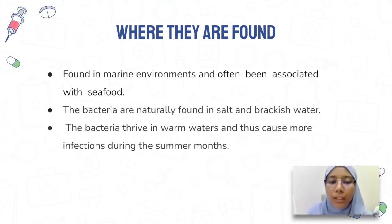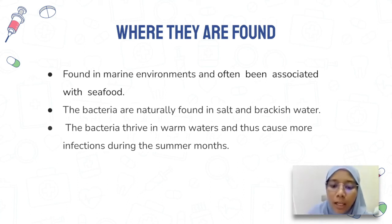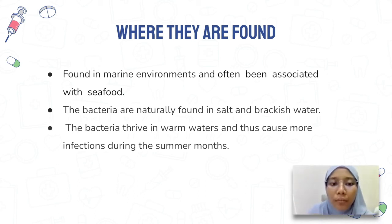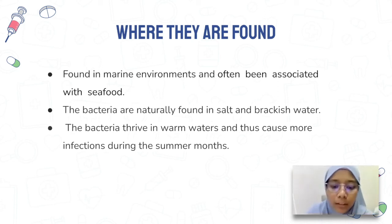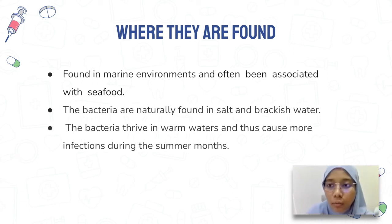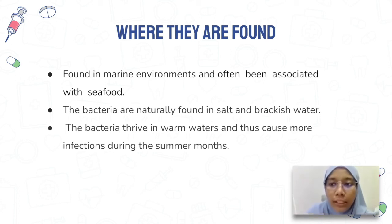My name is Nur Nabilah binti Muhammad Anwar and my matrix number is 200829. I will explain where Vibrio parahaemolyticus can be found, the disease it causes, and its effects. This bacteria is found in marine environments and is often associated with seafood. It is naturally found in salt and brackish water. People become infected by consuming raw or undercooked seafood, or by exposing a wound to seawater. The bacteria can thrive in warm water and thus causes more infections during summer months.